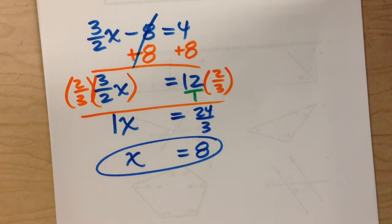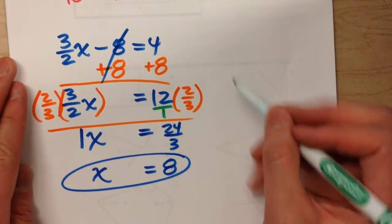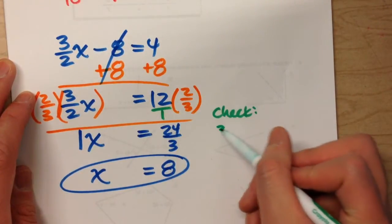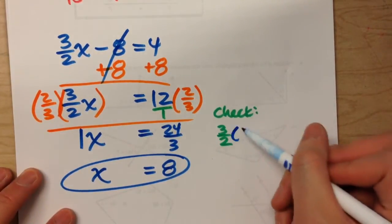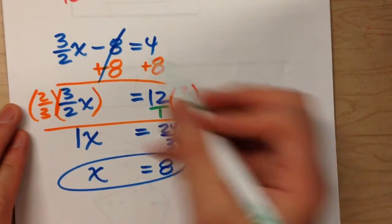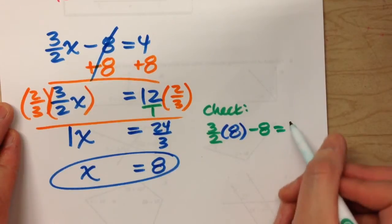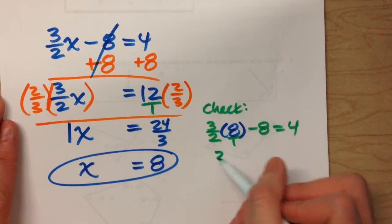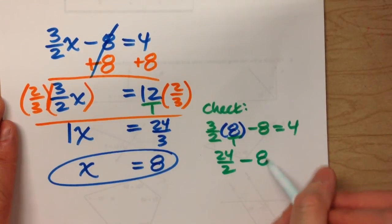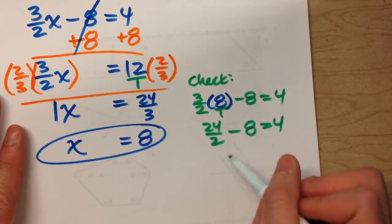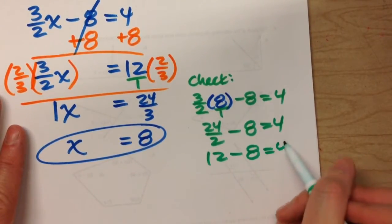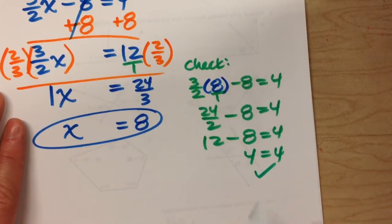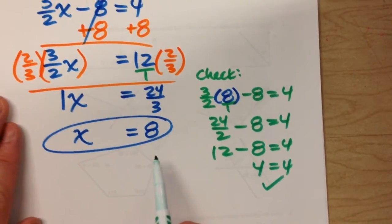We can check it just as easily. To check, take the 8 and plug it in for x. So instead of 3 halves times x, we do 3 halves times 8, minus 8 equals 4. Put 8 over 1, top times top, bottom times bottom. 24 divided by 2 is 12. Does 12 minus 8 equal 4? Yes — 12 minus 8 is 4. We know x must be 8.